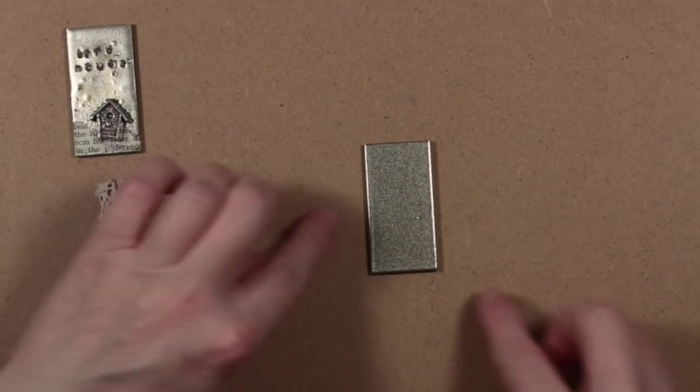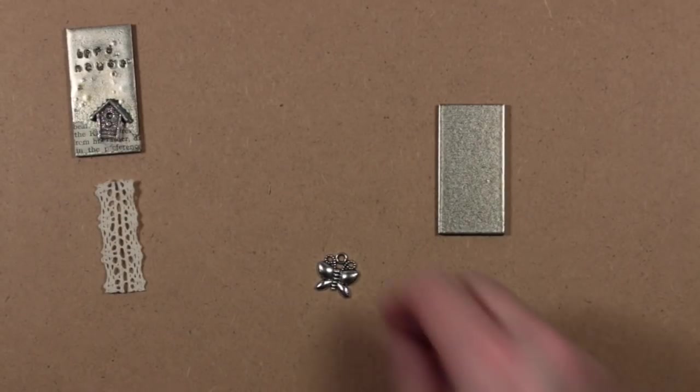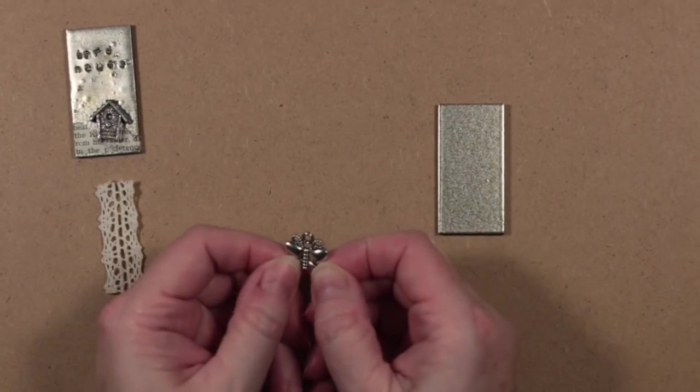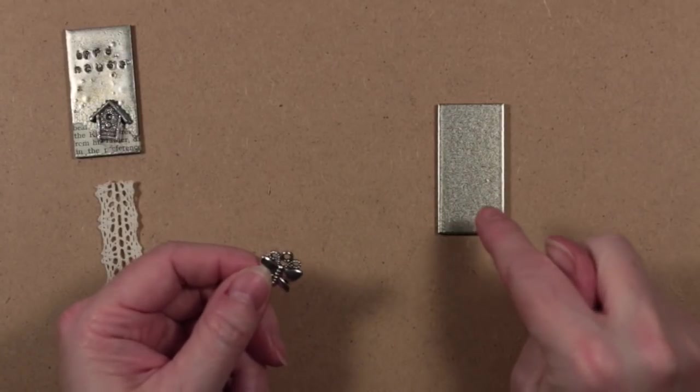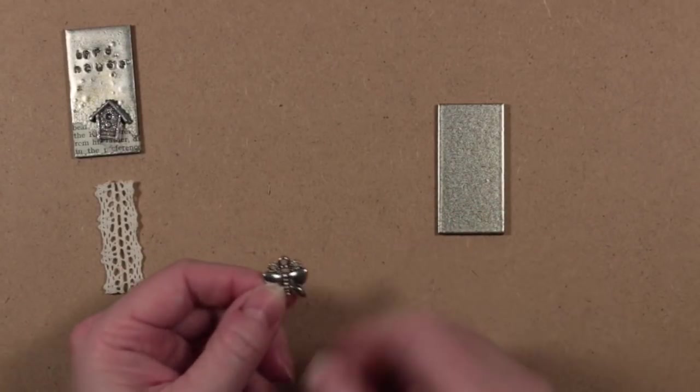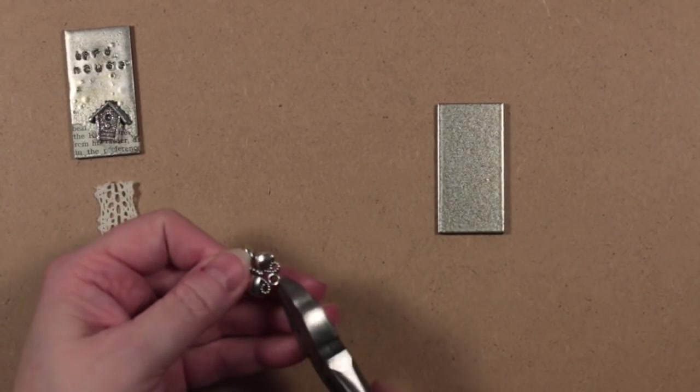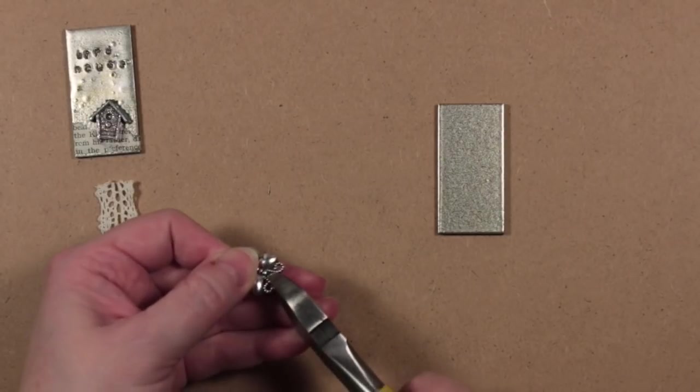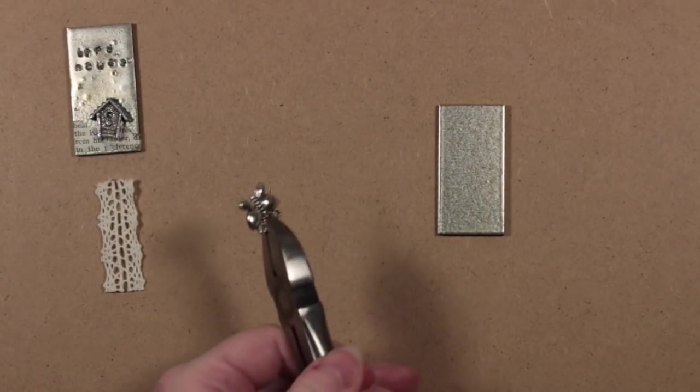While that is cooling after having its second coat applied and heated, I'm going to take a charm. This is a charm that I have kicking around. I have quite a few of these because I like to use them on journals. For the purposes of our little embellishment that we want to make, I don't really want this circle here, so I've got some wire clippers and I'm going to clip that off, and hopefully I won't take off the butterfly antennae.